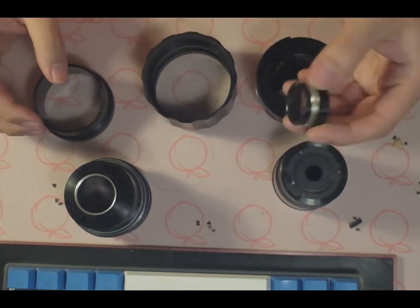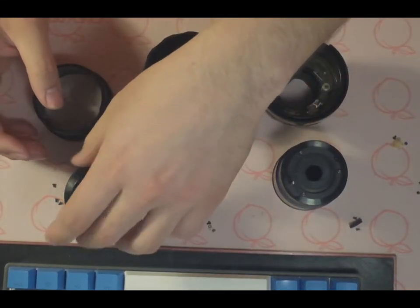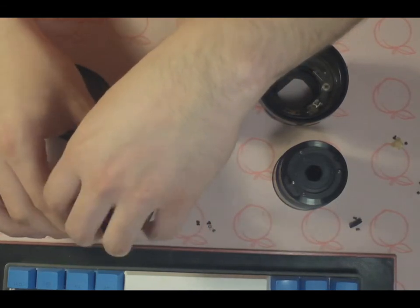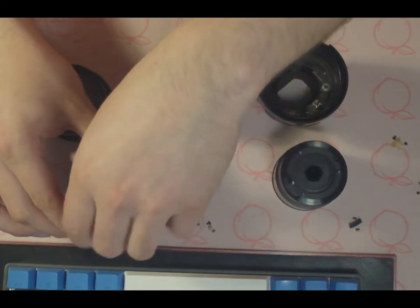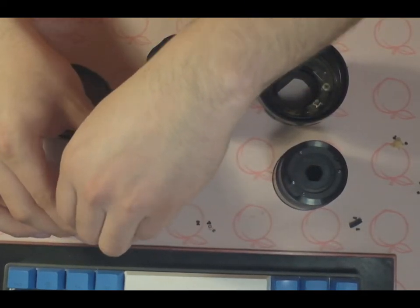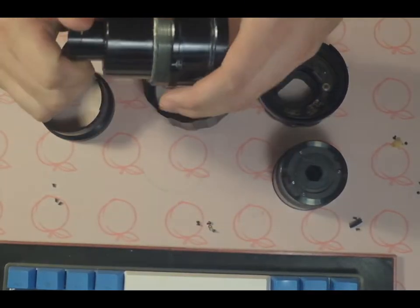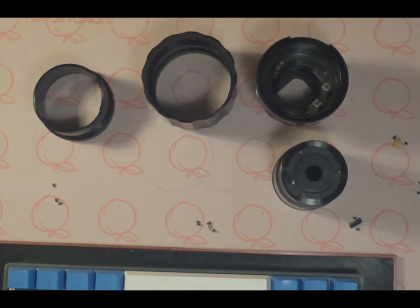But if for some reason, let's say you did have to service it. That's what you would have to do. You would have to remove at least one of these elements from either side and then clean in between them. I have no reason to do that. So I'm not going to. Okay. So reassembly of this lens. I'm going to start off with... Put a paper towel down if you can.